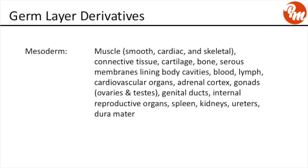Mesoderm derivatives include muscle — smooth, cardiac, and skeletal — connective tissue, cartilage, bone, serous membranes lining body cavities, blood, lymph, cardiovascular organs, the adrenal cortices, gonads including the ovaries and testes, genital ducts, internal reproductive organs, the spleen, the kidneys, the ureters, and the dura mater.